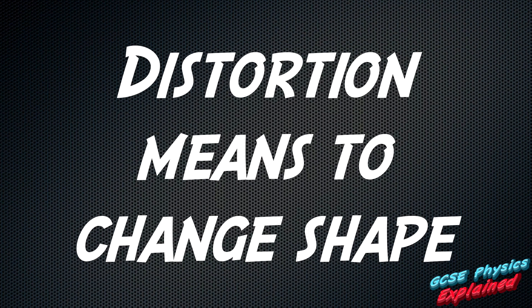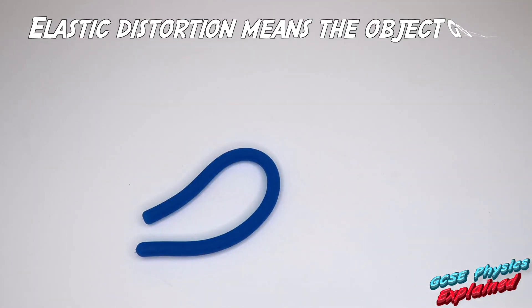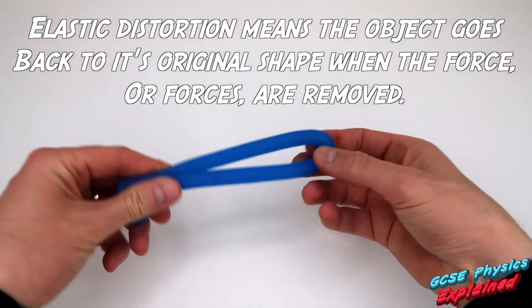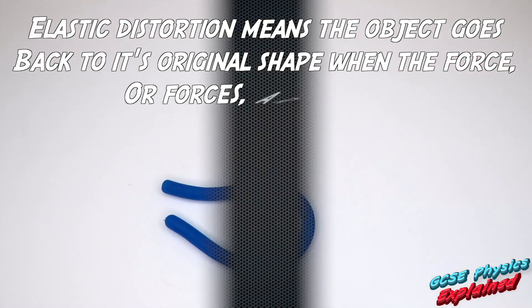Distortion means to change shape. Elastic distortion means the object goes back to its original shape when the force or forces are removed.